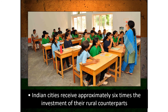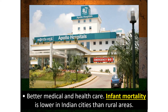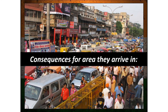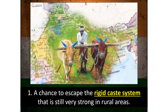Indian cities receive approximately six times the investment of rural areas, leading to better education, better medical and healthcare, and lower infant mortality. One pull factor for migrants arriving in Calcutta is the chance to escape the rigid caste system, which is technically illegal in India but still plays a strong role in rural villages — including segregated colonies, separate water wells, and marriage only within one's caste.